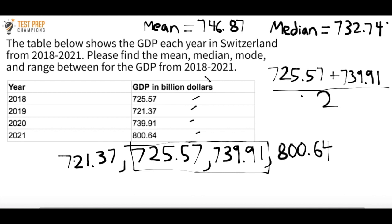The mode was actually a trick question here — there is no mode in this data set. The mode is the most frequently occurring number. If two of the same number appeared, that would be the mode; three of the same, that would be the mode. Whatever number shows up the most times is the mode. But in this case, all numbers appear just once, so there is no mode.